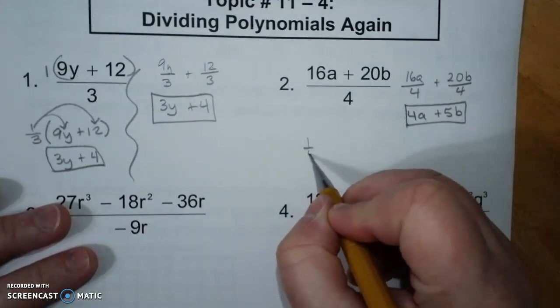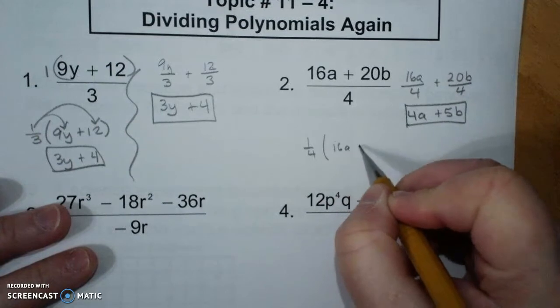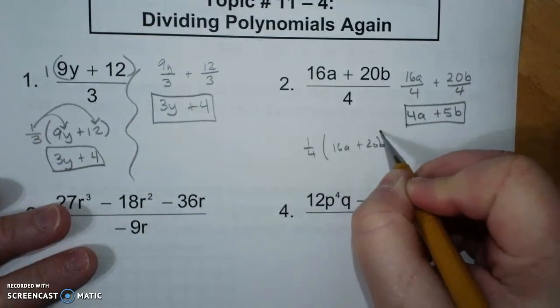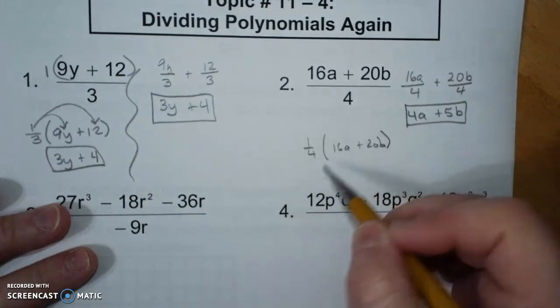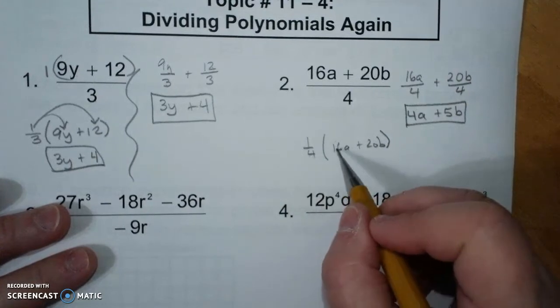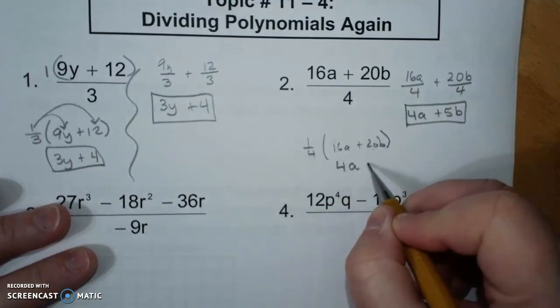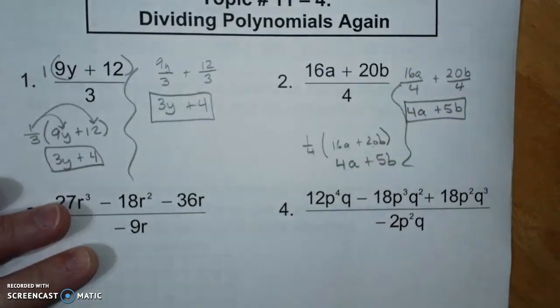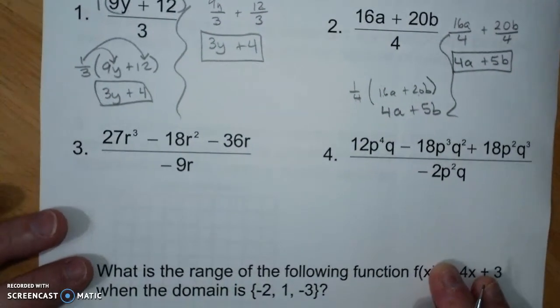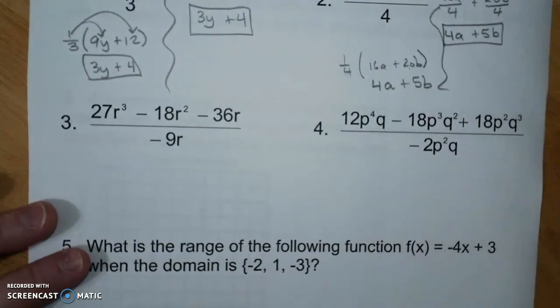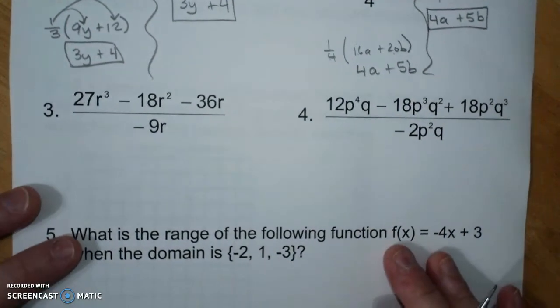Here I take the 1 fourth out. I do 16a plus 20b. I undistribute. 1 fourth times 16 is 4a. 1 fourth times 20 is 5b. Again, same way. I usually tend to just separate them and then simplify them.